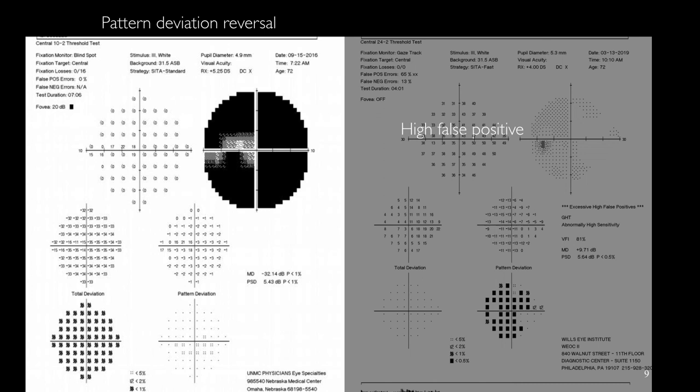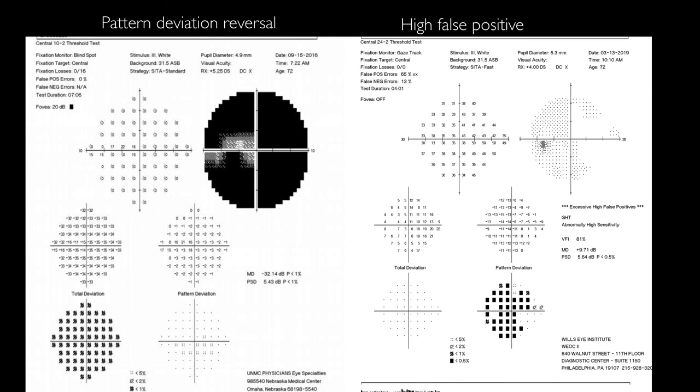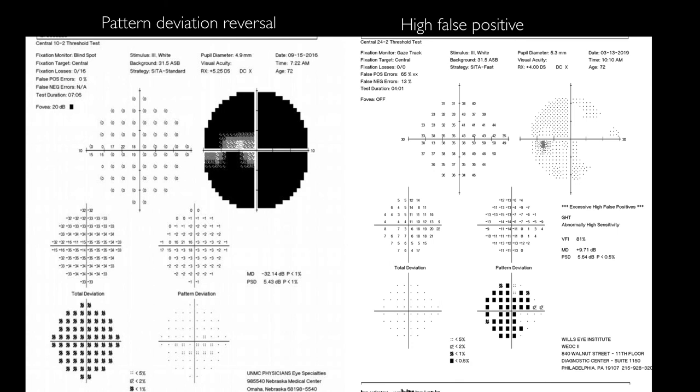If we have a white total deviation and a dark pattern deviation plot, it's only seen in those patients with high false positive.